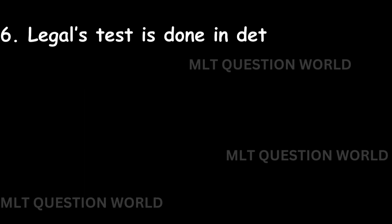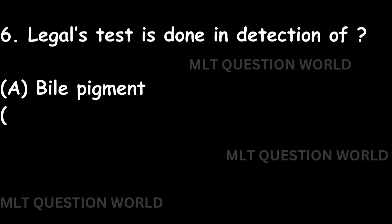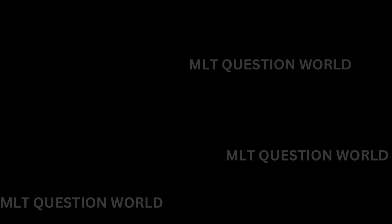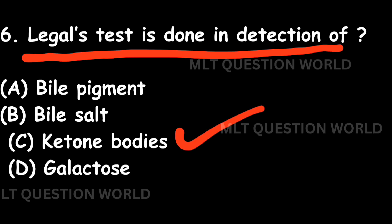Next question: Legal's test is done for detection of — Option A: Bile pigments. Option B: Bile salt. Option C: Ketone bodies. Option D: Galactose. The right answer is Option C: Ketone bodies. For ketone bodies, other tests include Rothera's test, Gerhard's test, and Hart's test.